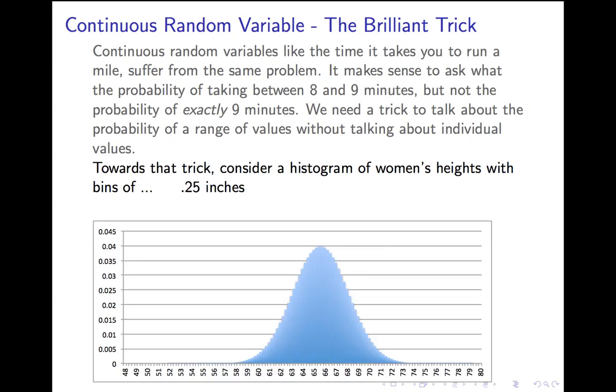If we did a quarter of an inch, if we had a really big data set, we could look at a histogram with quarter-inch bins, and it would look like this. And that's really starting to look like a nice, smooth curve, with tiny little wobbles in it.